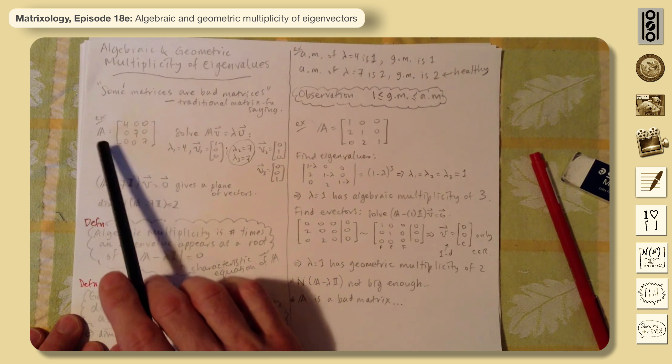But there you go. Algebraic and geometric multiplicities of eigenvalues. Trouble arises when we have repeated roots to the characteristic equation. Whenever that happens, there's potential for the dimension of the null space associated with that eigenvalue just to not be big enough, to not reach the algebraic multiplicity.